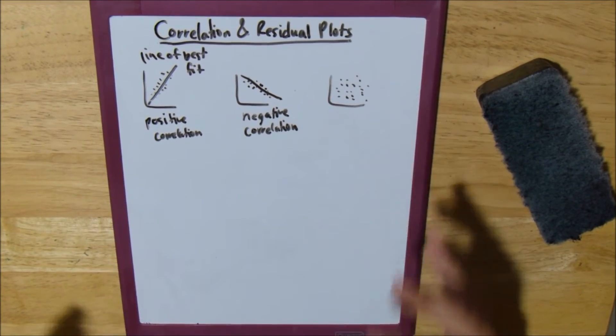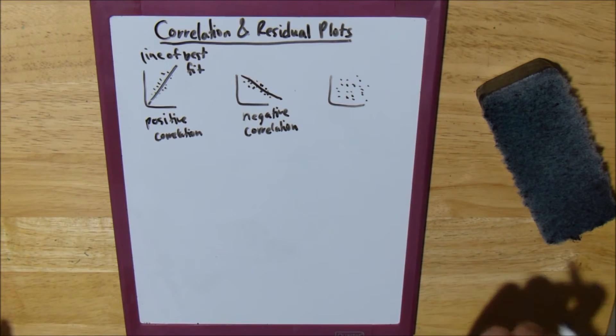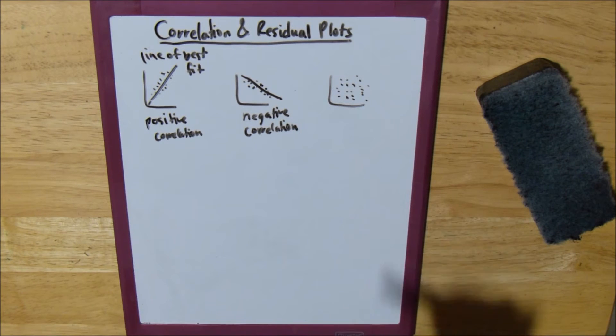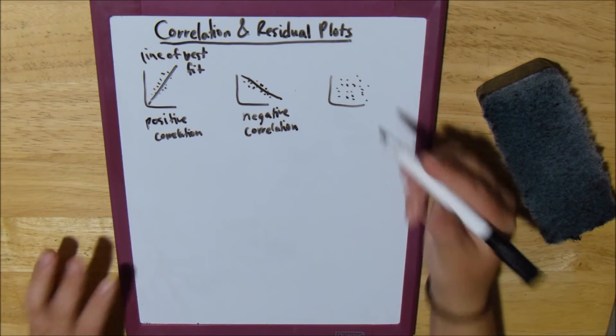And then we have this graph. This graph is just a mess. We don't know which way it's going.